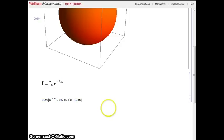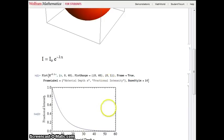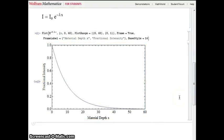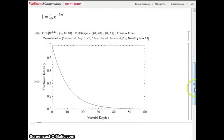Let's plot this function. You can see that as the material thickness x increases, the intensity of the transmitted radiation decreases exponentially.